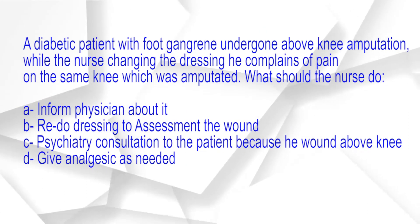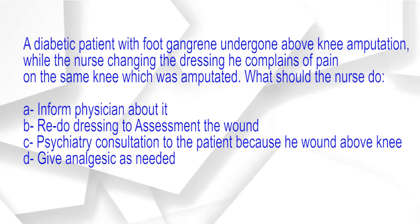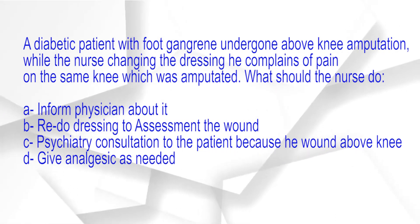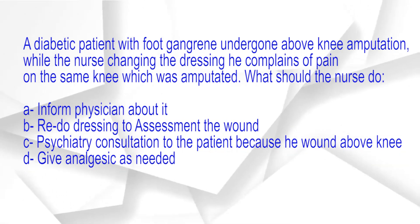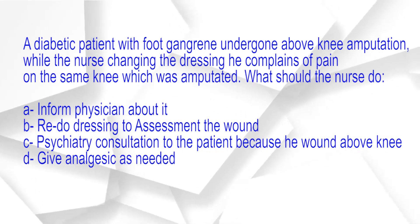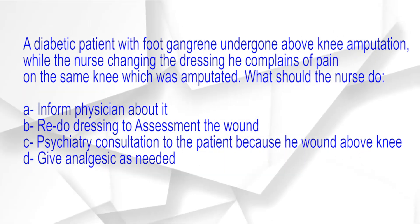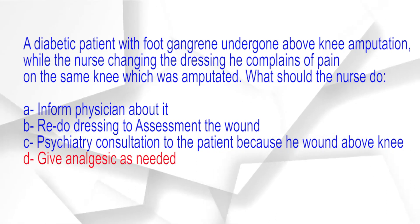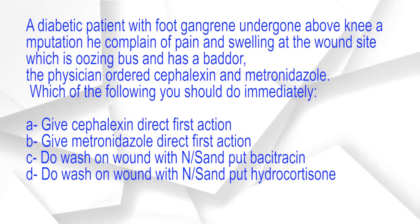A diabetic patient with foot gangrene undergoes an above-knee amputation. While the nurse is changing the dressing, the patient complains of pain in the same knee that was amputated. What should the nurse do? A. Inform the physician. B. Redo dressing to assess the wound. C. Psychiatry consultation. D. Give analgesic as needed. The correct answer is option D: Give analgesic as needed.